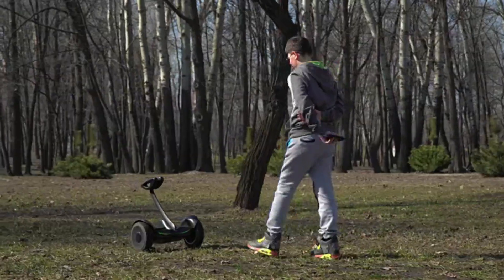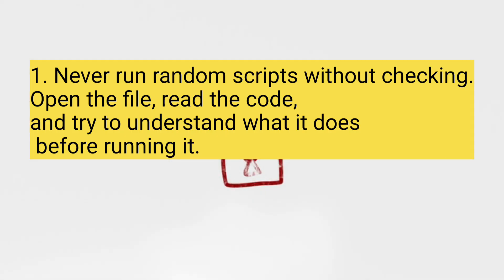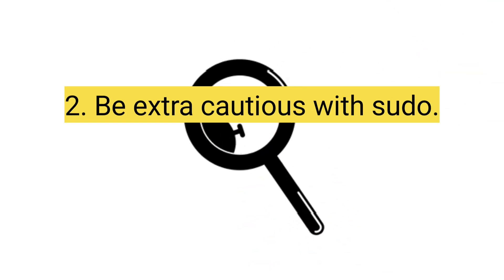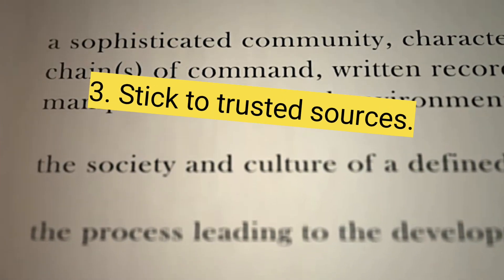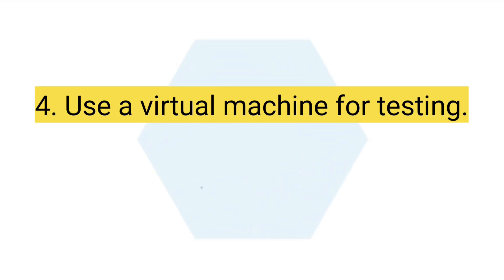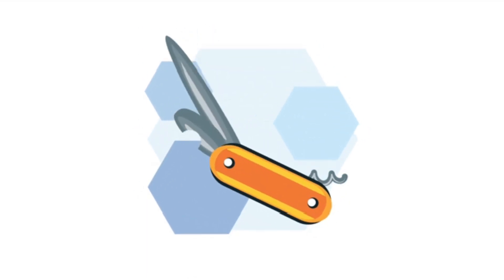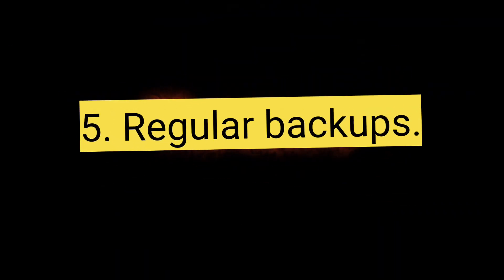Now the real question — how can you protect yourself? 1. Never run random scripts without checking. Open the file, read the code, and try to understand what it does before running it. 2. Be extra cautious with sudo. Anytime a script or command asks you for sudo, pause and double check — that's root level access. 3. Stick to trusted sources. Download tools only from official websites or verified repositories. 4. Use a virtual machine for testing. If you're curious about a new script, test it in a sandbox or VM — that way your main system stays safe. 5. Regular backups. Keep your important files backed up so even if something happens, you don't lose everything.